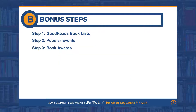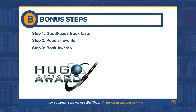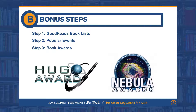Bonus step number three: target any book awards for your genre. Many readers love reading award winners and will actively pursue that title when they hear of it winning. For science fiction, awards like the Hugo and Nebula Award are perfect targets for those sci-fi military writers. So check out what awards exist for your niche and genre.